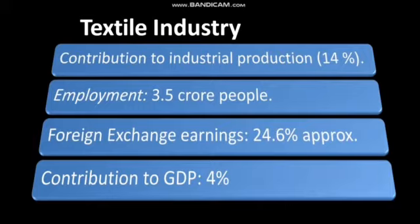The textile industry earns about 24.6% foreign exchange and contributes 4% towards GDP. In the early years the cotton textile industry was concentrated in the cotton growing belt of Maharashtra and Gujarat due to the following reasons.